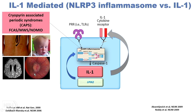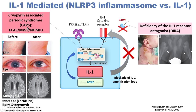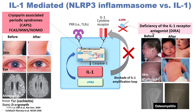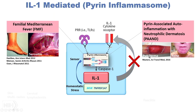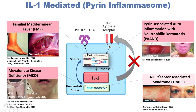The most prevalent IL-1-mediated auto-inflammatory diseases are the cryopyrin-associated auto-inflammatory diseases caused by a gain-of-function NLRP3 inflammasome, and deficiency of IL-1 receptor antagonist, or DIRA. Gain-of-function mutations in the pyrin inflammasome cause a more extended phenotype, not only familial Mediterranean fever but also some neutrophilic dermatosis syndromes. The other IL-1-mediated diseases are deficiency of mevalonate kinase and TRAPS.